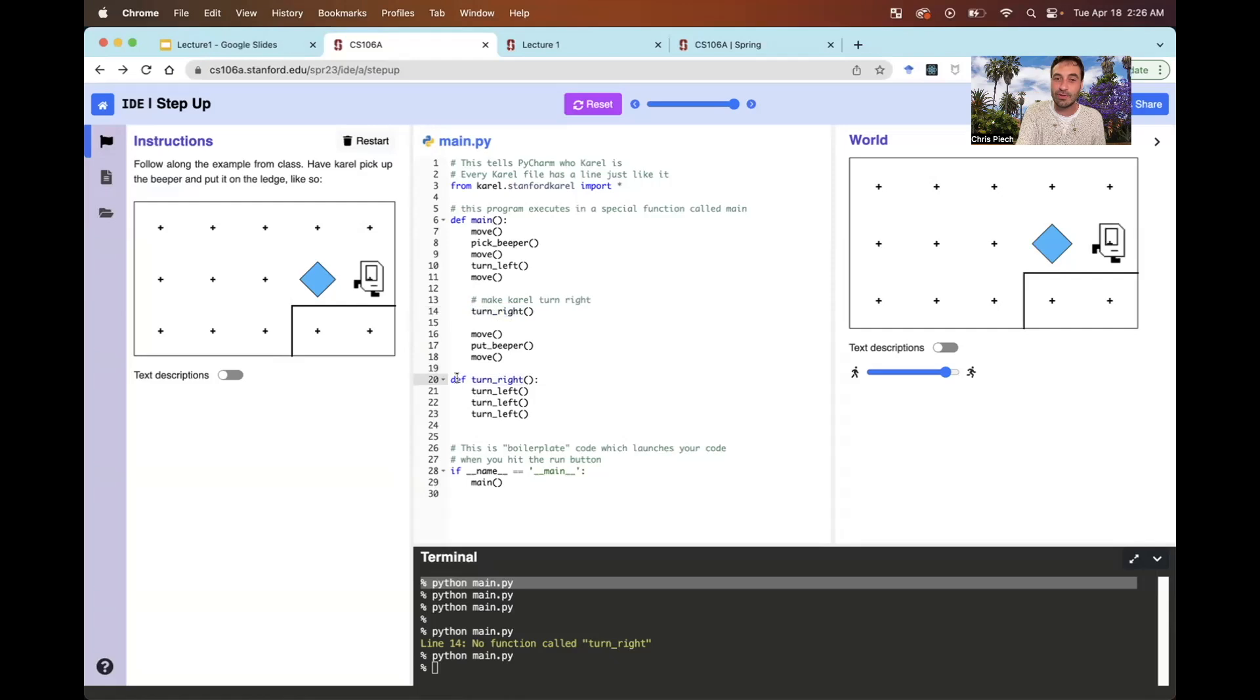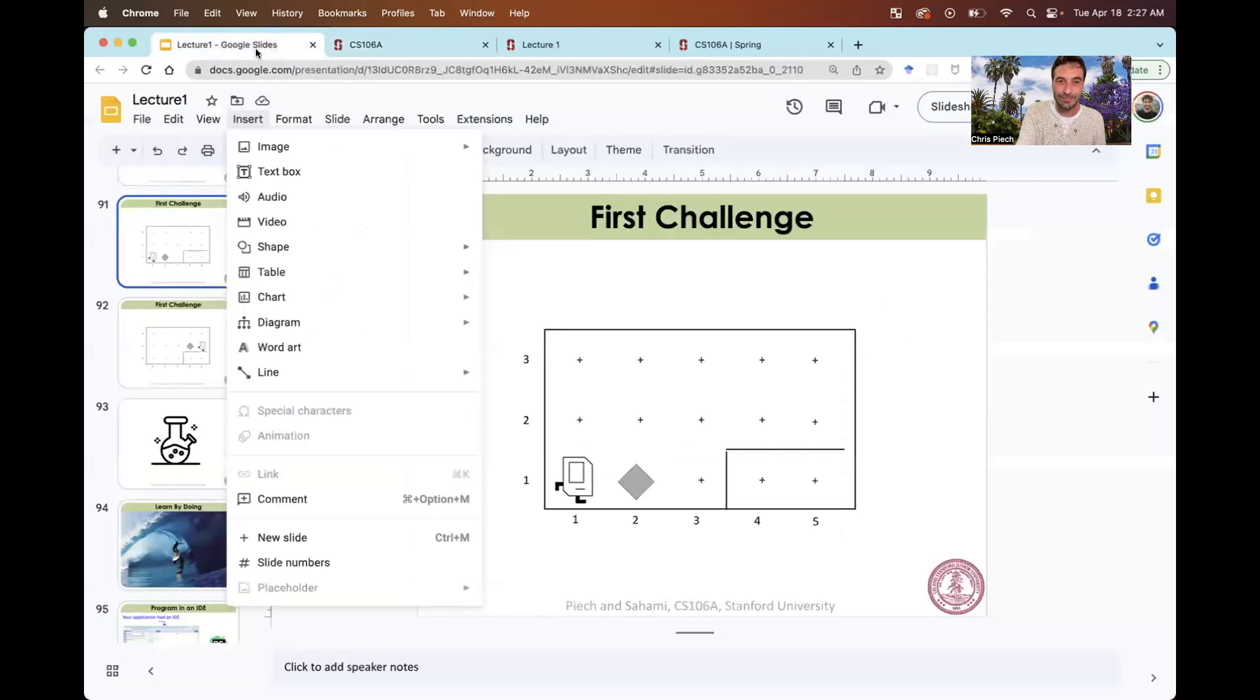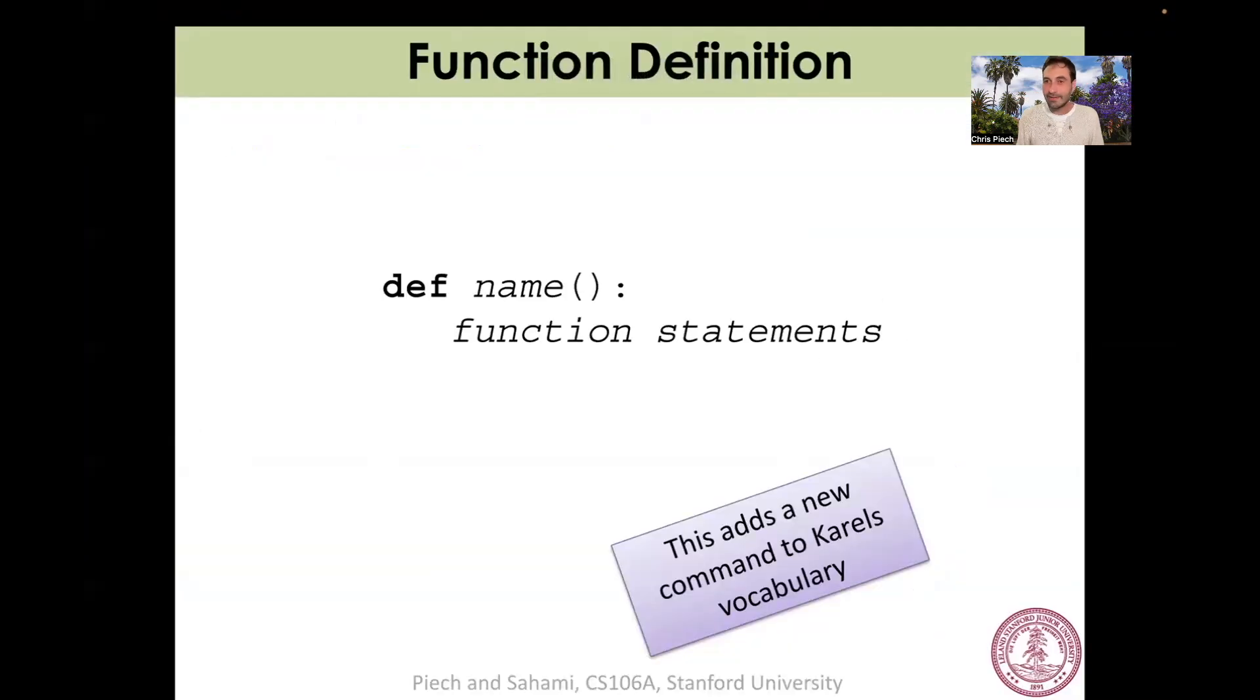So the big concept: you can define new functions. To say that more concretely, if you want, you can teach new vocabulary to Carol, or any Python program for that matter, by using a def. And you write def, you give it a name, parentheses, colon, and then you write the function statements that you want to be executed anytime somebody wants to do the command with your name. Don't write actually name there, give it something like turn right.